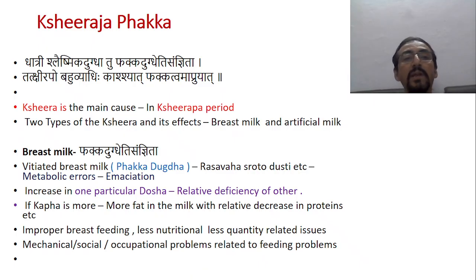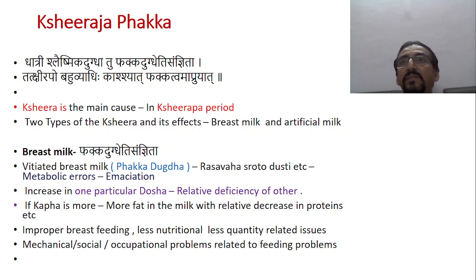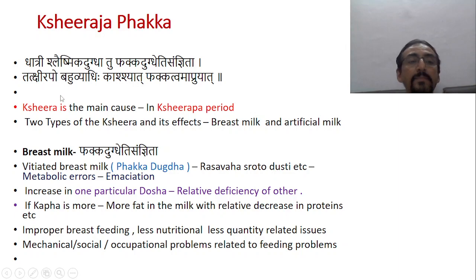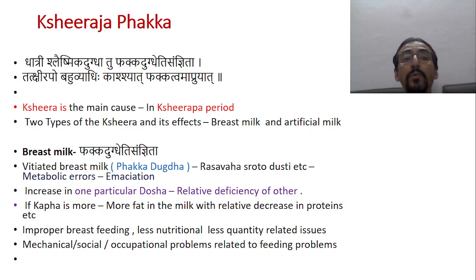Now we come to kshiraja fakka — what exactly kshiraja fakka is. Number one: this is a chronic disorder. Looking at the last two words of the shloka — Tath kshiraja fakka — and the last line of the shloka, we see three successive stages.